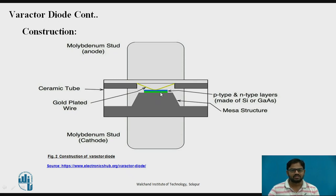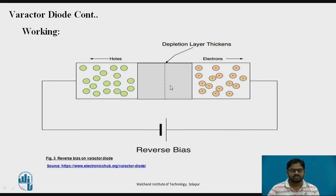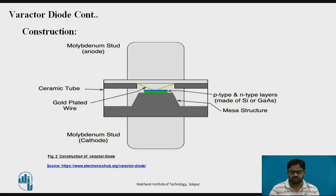The PN junction is formed at the center. This is the molybdenum structure — molybdenum is a metal connected to the P-type molybdenum stud at the anode side and the N-type molybdenum stud at the cathode side. The P side is upper and the N side is lower. Molybdenum studs provide better conductivity and better charge separation. An important fact is that the doping of the P-type and N-type semiconductor is linear — less at the junction side and increasing linearly toward the ends.